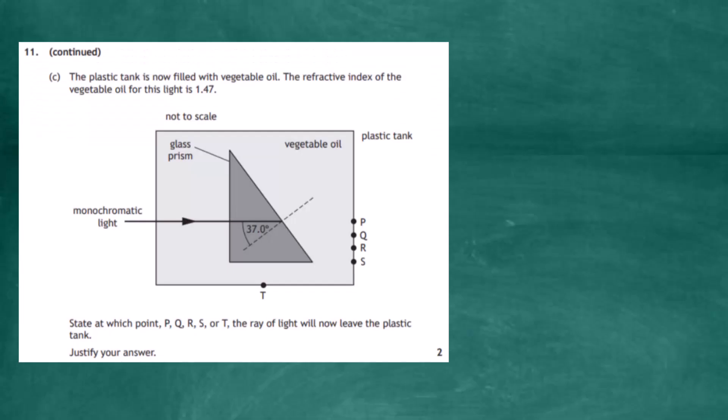Question 11 continued, part C. The plastic tank is now filled with vegetable oil. The refractive index of the vegetable oil for this light is 1.47. You can see the diagram there. Monochromatic light enters into the glass tray, which is filled with vegetable oil, heads towards the glass prism, and you've got to decide where it's going to strike: either P, Q, R, S, or even T at the bottom. We must justify our answer.